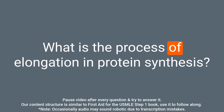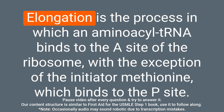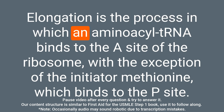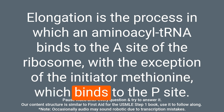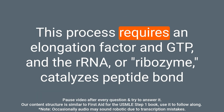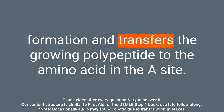Question: What is the process of elongation in protein synthesis? Answer: Elongation is the process in which an aminoacyl-tRNA binds to the A site of the ribosome, with the exception of the initiator methionine, which binds to the P site. This process requires an elongation factor and GTP. The rRNA, or ribozyme, catalyzes peptide bond formation and transfers the growing polypeptide to the amino acid in the A site.